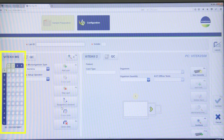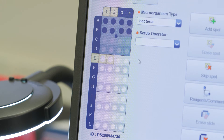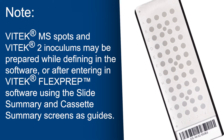Click OK. A graphical representation of the slide appears. Acquisition groups on the slide which have been previously acquired will appear in gray as they cannot be used again, even if empty spots remain. Note, Vitec MS spots and Vitec 2 inoculums may be prepared while defining in the software or after entering in Vitec FlexPrep software using the slide summary and cassette summary screens as guides.